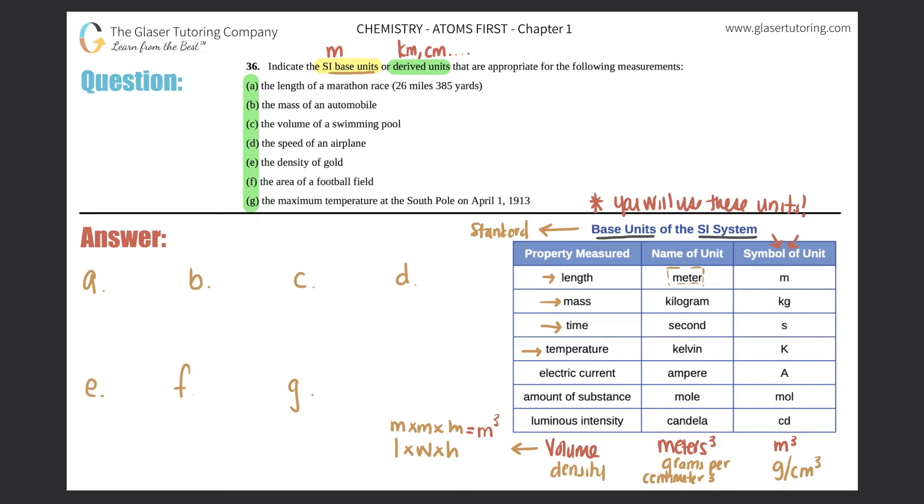All right, so for a, the length of a marathon race which is 26 miles 385 yards. So the base unit technically would be meters, so I'm gonna put that as an m. But that's a long race, usually that would be so many meters. I would say maybe hundreds of meters, don't quote me on that though, but it's a lot.